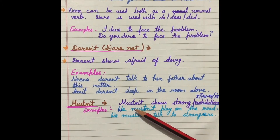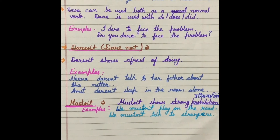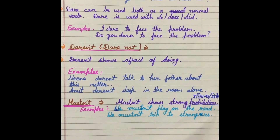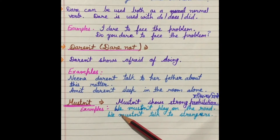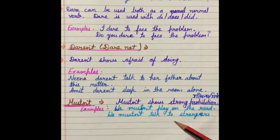Must not shows strong prohibition — prohibition का meaning होता है निषेध या प्रतिबन्ध. जिस चीज़ पर strongly रोक लगी हुई है, निषेध है उस काम को करना, for that we use must not. For example: 'We must not play on the road' — यह prohibited है, रोड पर हमें नहीं खेलना चाहिए. 'We must not talk to strangers' — हमें अजनबी लोगों से बातें नहीं करनी चाहिए, this is also a prohibition.